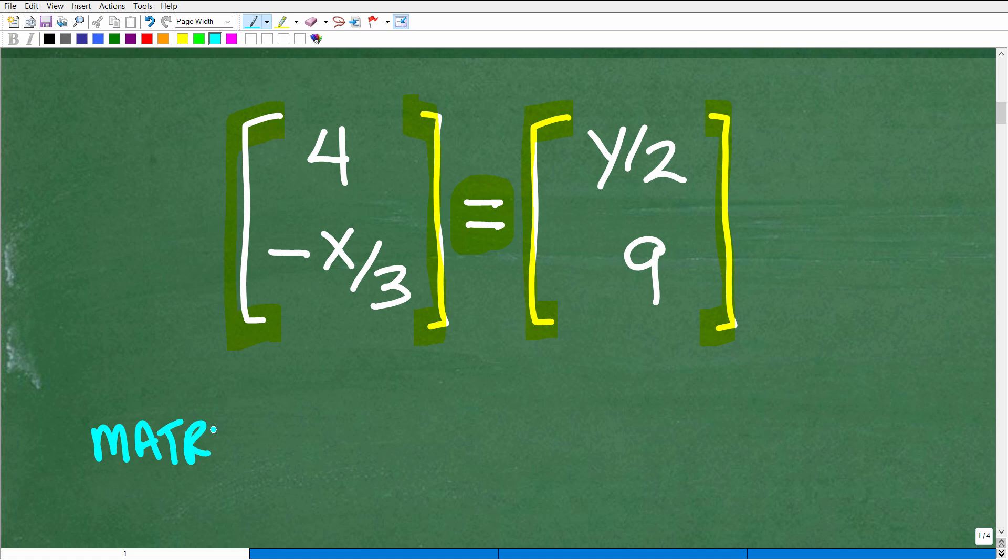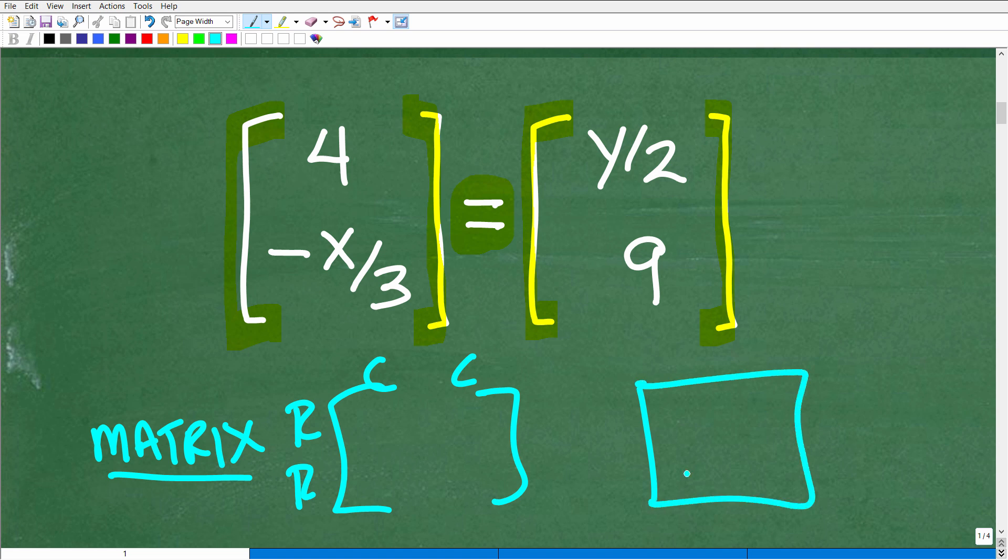So here we have one over here and one over here. And then we have these entries inside these particular matrices. So what is a matrix? Just a real quick definition. A matrix is nothing more than a way to organize information by rows and columns. That's it. Very simple.